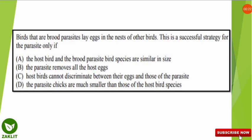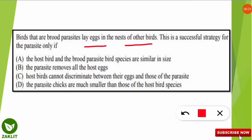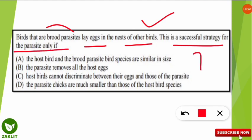Today's first question is about birds that are brood parasites — they lay eggs in the nest of other birds. This is a kind of parasitism in which one bird lays its egg in the nest of another bird. This strategy is successful for the parasite only under a specific condition. Read all the options carefully. The correct option is C.